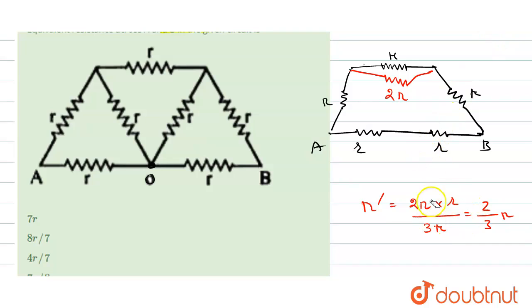So, in place of these two, we can simply replace it by R, which is 2 by 3R. Now this R, 2 by 3R and R are in series, so simply we have to add them. So it will be 2 by 3R plus R.